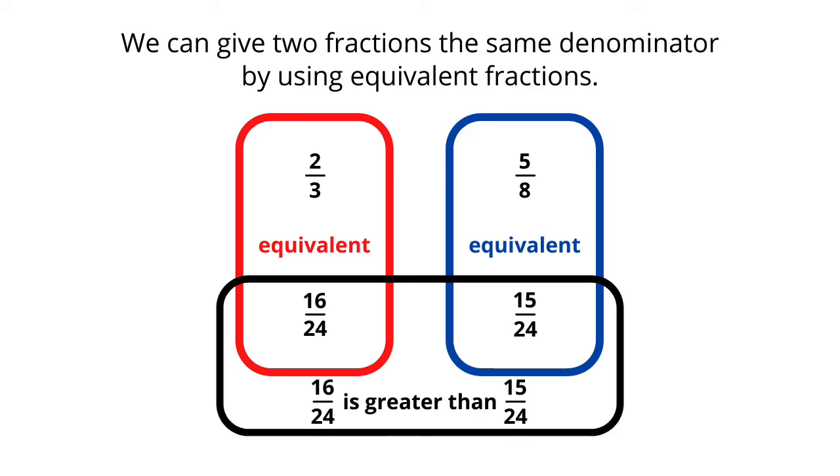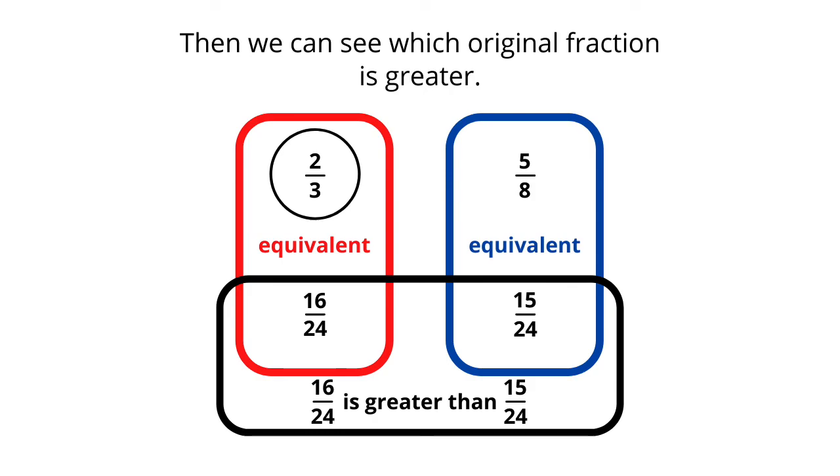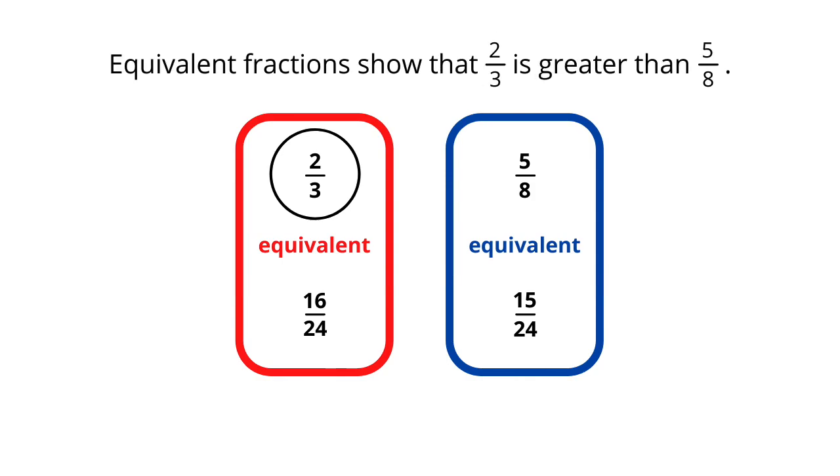So we can compare the equivalent fractions, sixteen-twenty-fourths and fifteen-twenty-fourths, and see which one of those two is greater. It's sixteen-twenty-fourths. And sixteen-twenty-fourths is equivalent to two-thirds. That's one way to see that two-thirds is greater than five-eighths.